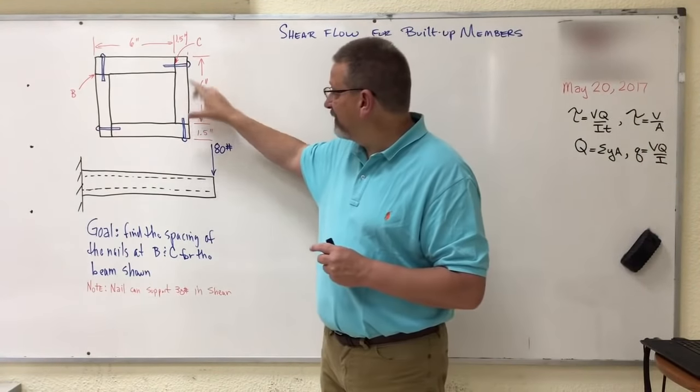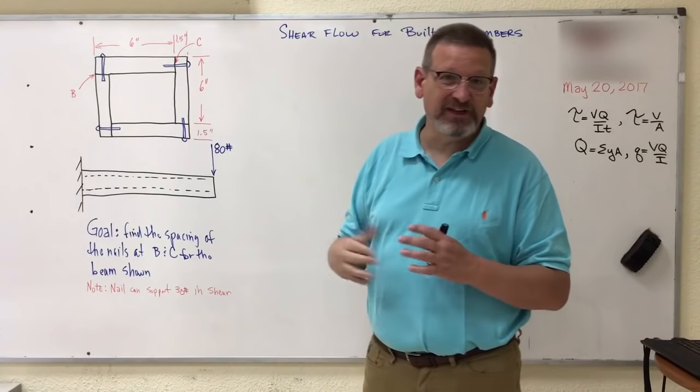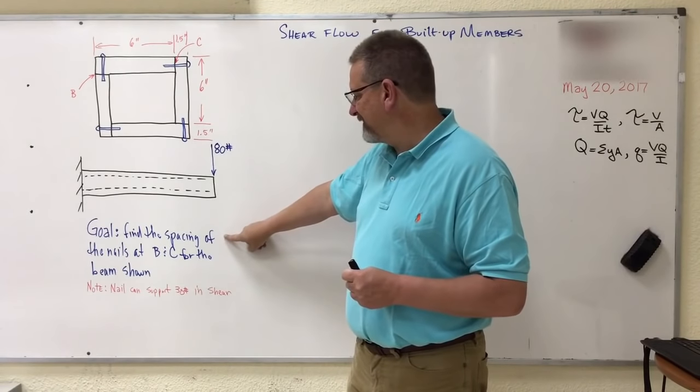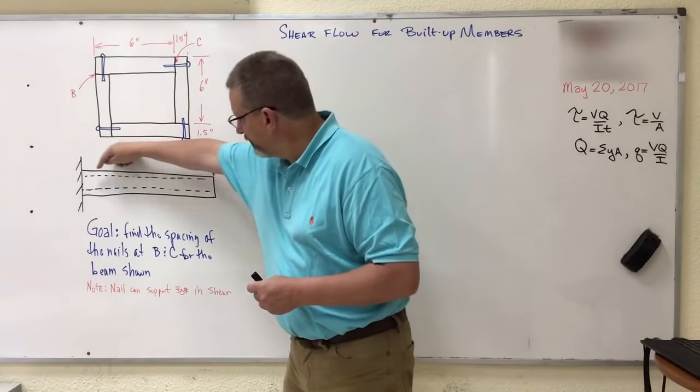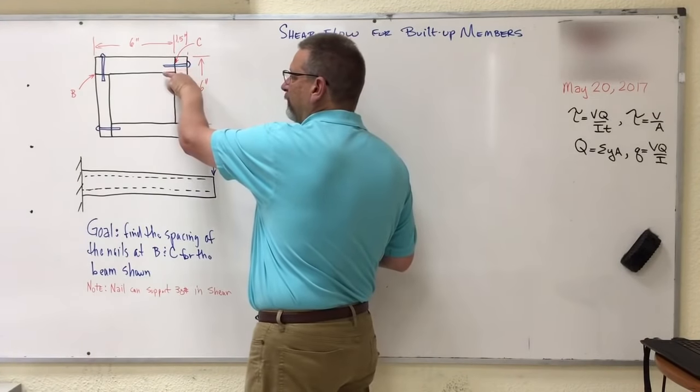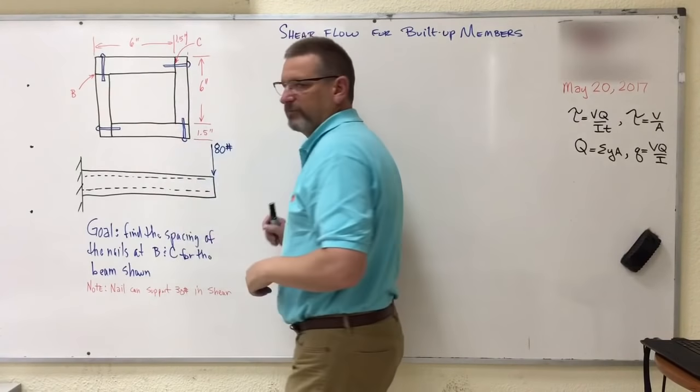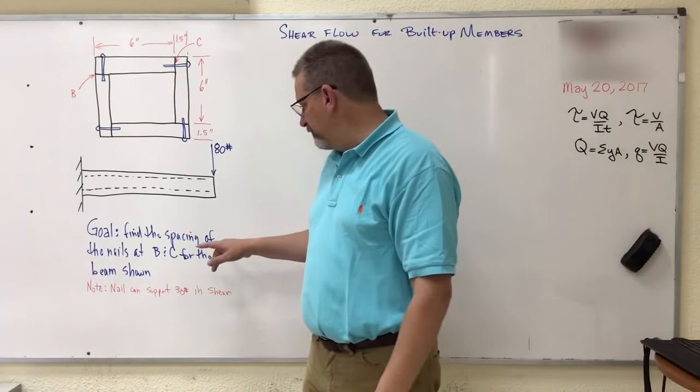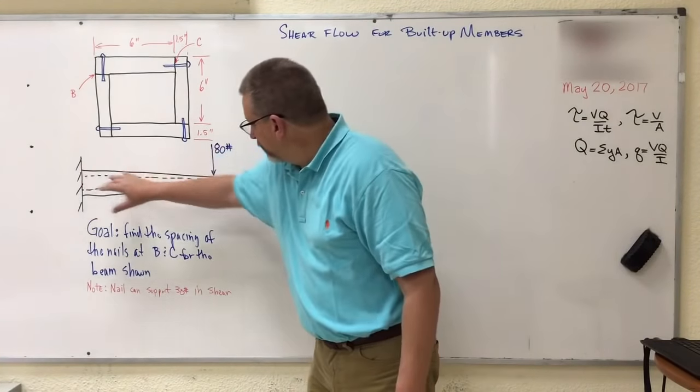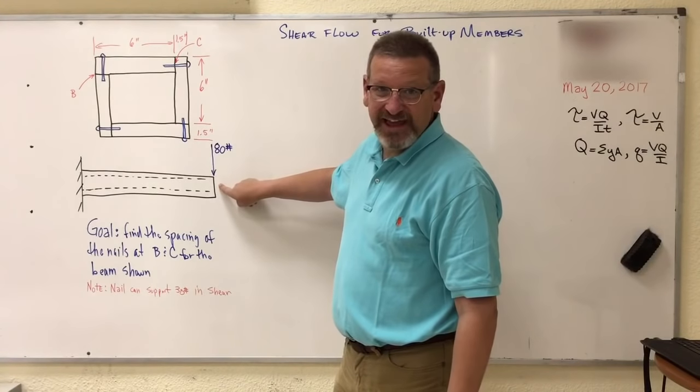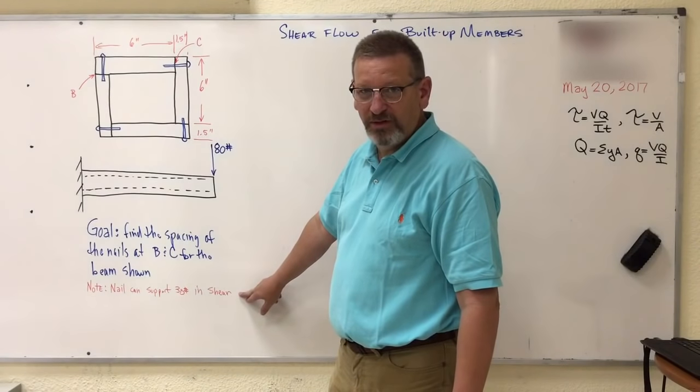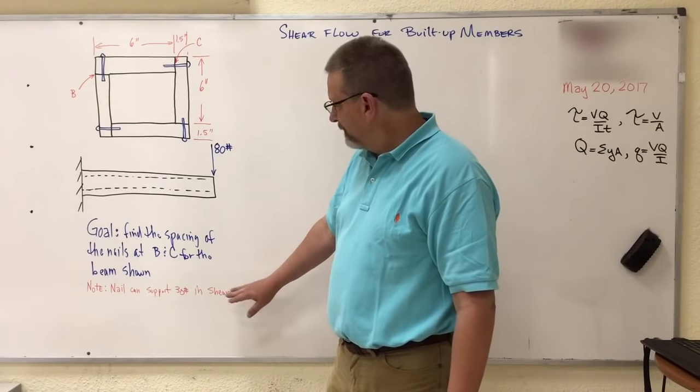That's when I have a beam that is built of multiple pieces, but in this case it's nailed together. So the goal for this guy here is to find the spacing of these nails as they go along the beam there at point B and C. So one of them is nailed horizontally and one of them is vertically. So we want to find what's the spacing for the horizontal nails, what's the spacing for the vertical nails. If the beam is like fixed on one end and then on the other end it has an 80 pound concentrated load. And it tells us down here that the nail can support no more than 30 pounds in shear force.